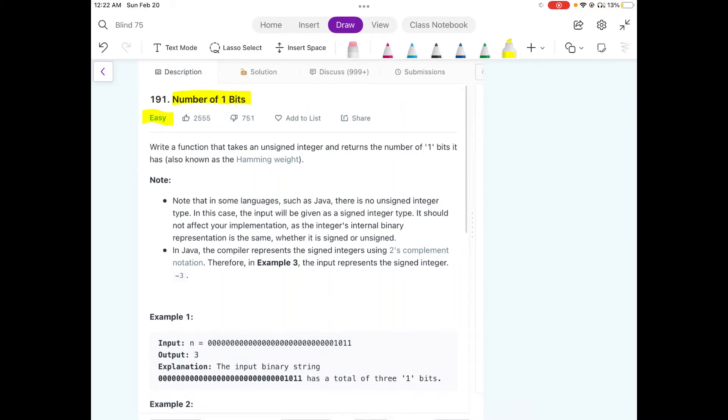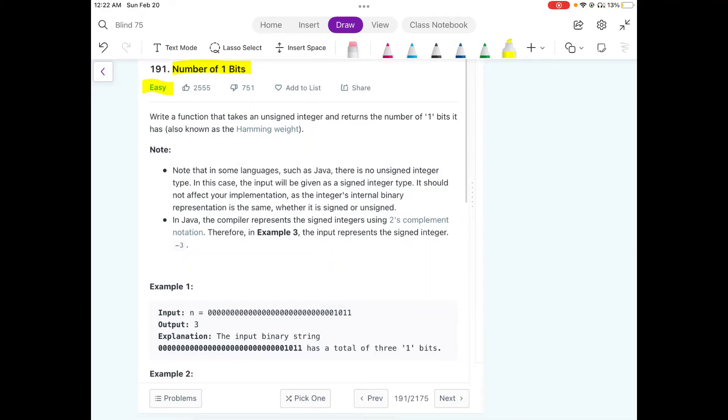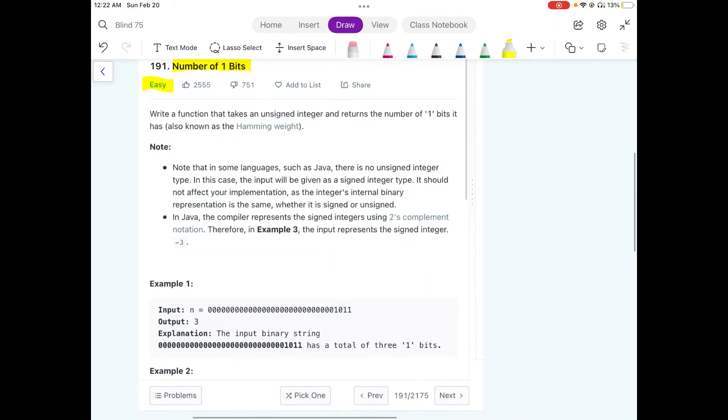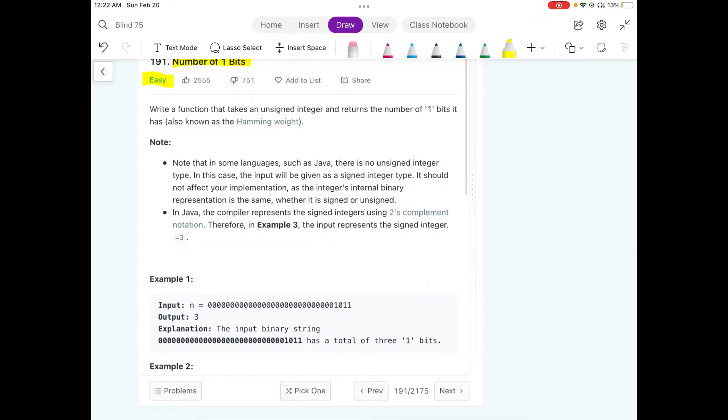And this is a bit manipulation problem. I know a lot of people don't like it, but it's really simple to understand. So the problem statement is pretty simple. We just need to check that in any given integer, if we represent it in binary form, how many times the 1 value is being repeated.